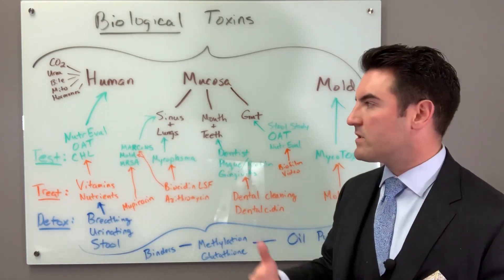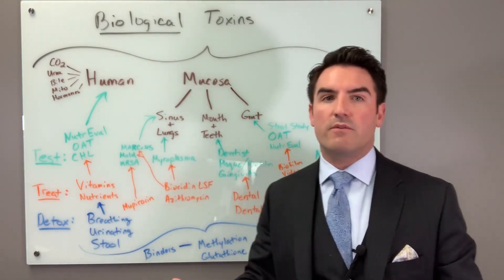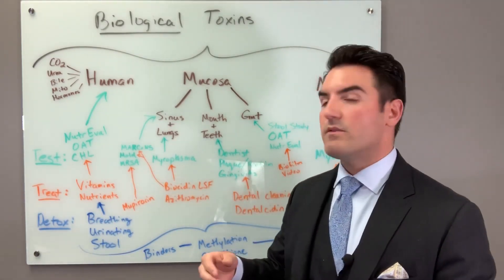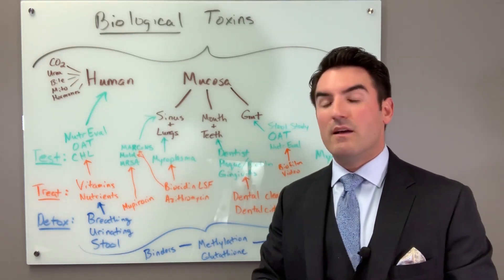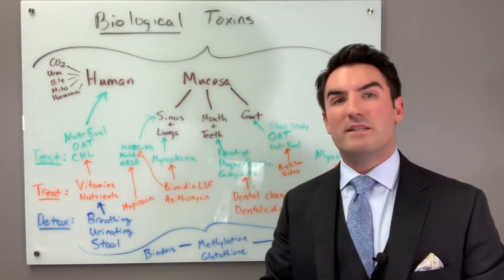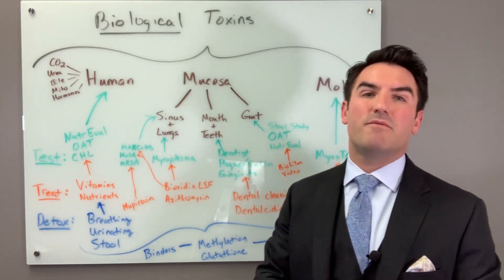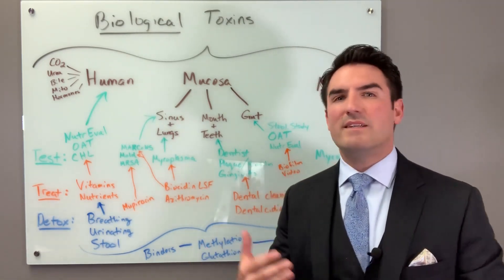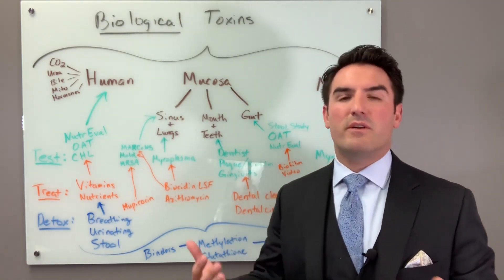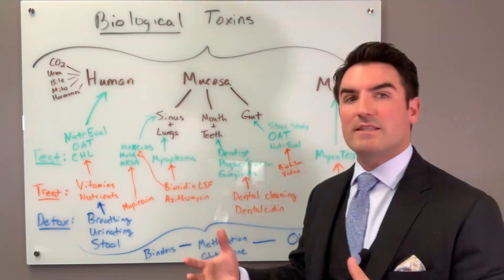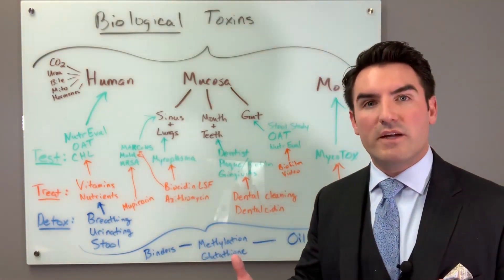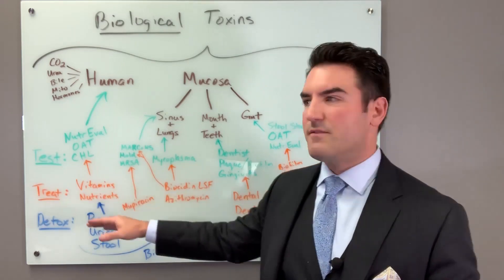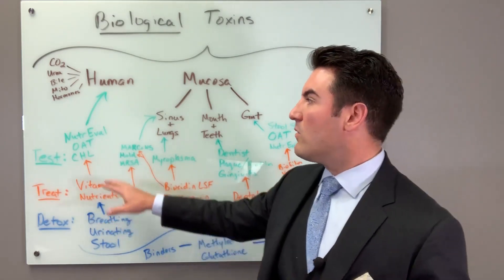The next test on the list is the Cleveland Heart Lab, which is what we're currently using for advanced markers. It includes vitamins B12, vitamin D, magnesium, ferritin (your iron storage), and omega-3s - all the things your body needs on a regular basis to manufacture energy and detoxify.